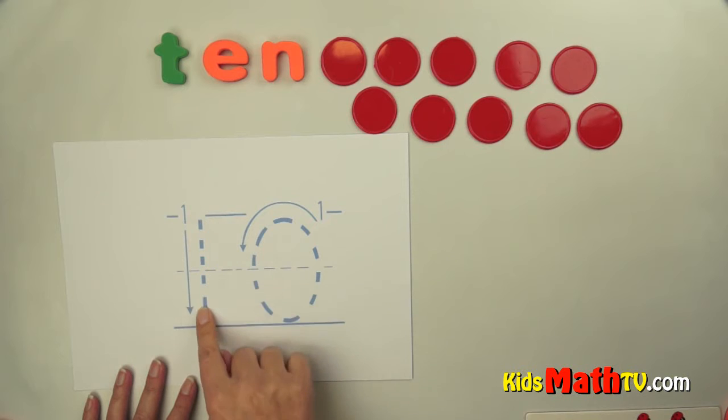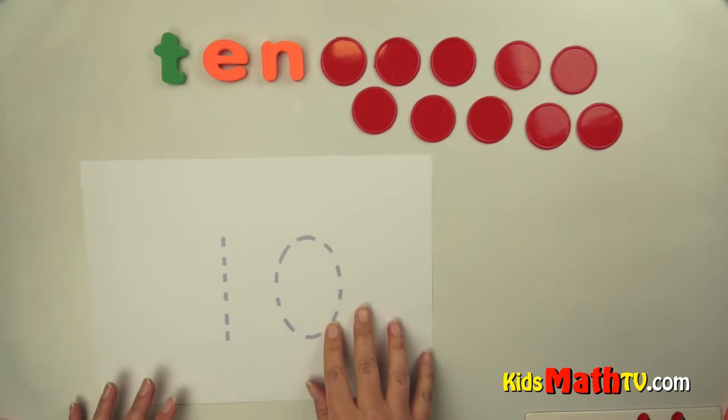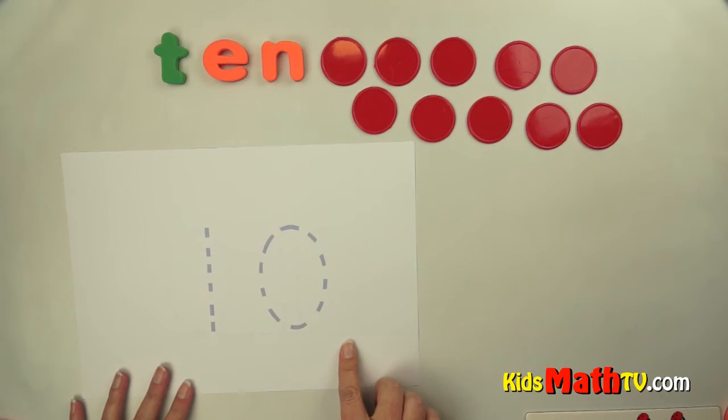10. 1, 0 for 10. Let's turn it on this side. There's the number 10. It's a 1 and a 0 for 10.